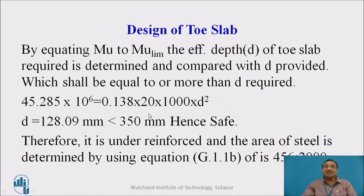Design of toe slab: by equating MU to MU limit, the effective depth D of the toe slab required is determined and compared with D provided, which shall be equal or more than D required.